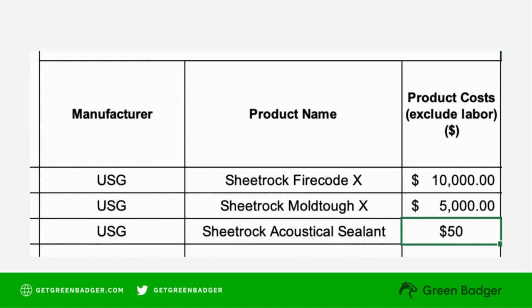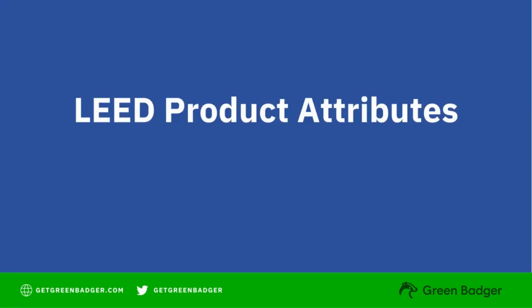Identify each product you're using, list them individually in a separate line item, and show product costs excluding any labor. Next, we're going to look for any LEED attributes that these products might have.